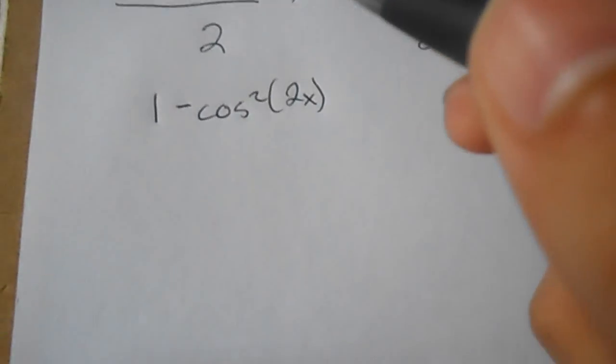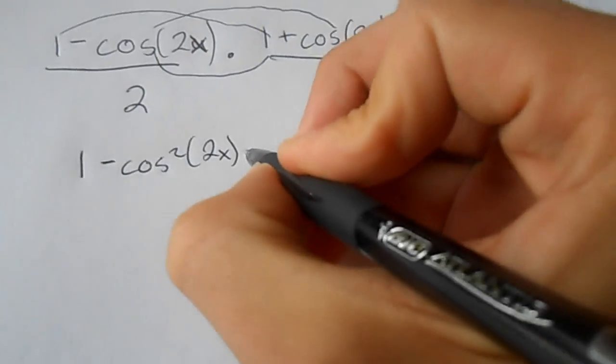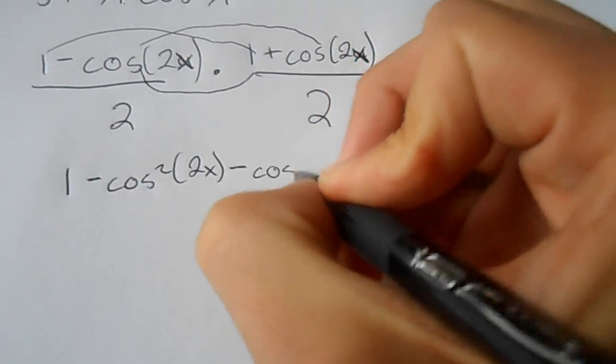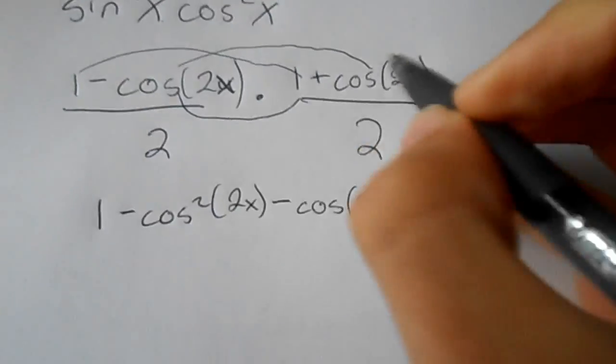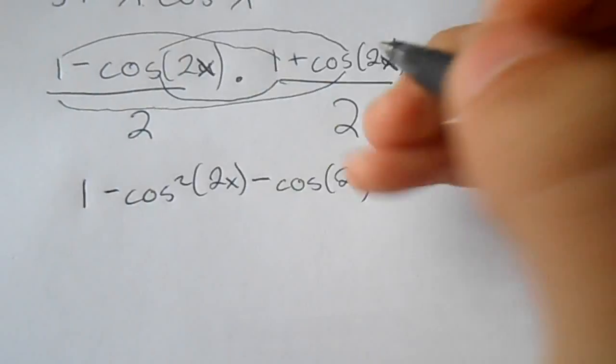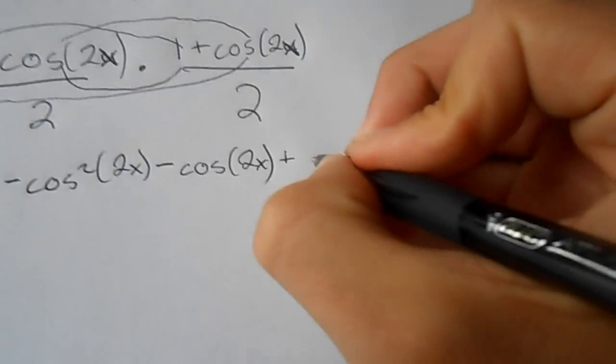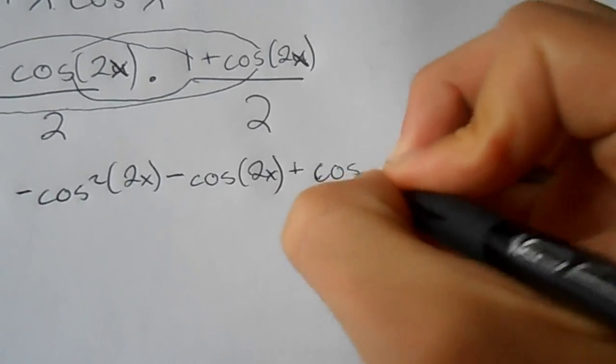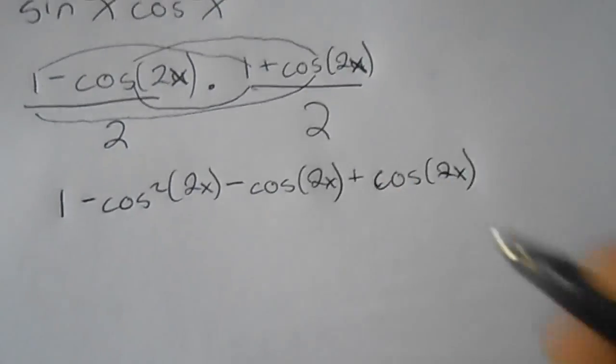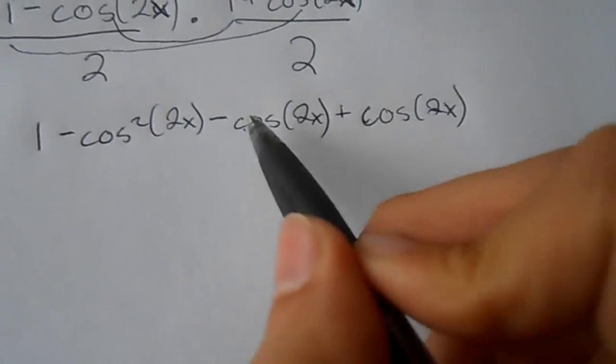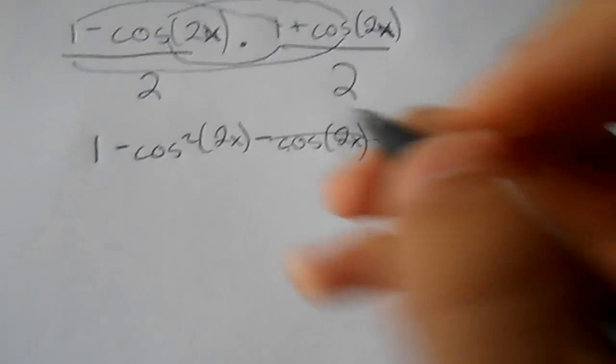And then after that, negative cos(2x) times one would be negative cos(2x), and positive cos(2x) times one would be positive cos(2x). Now you can see that these two cancel, so I'll just take that off.